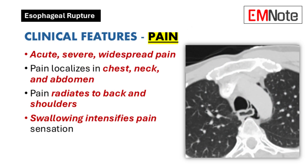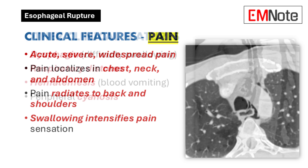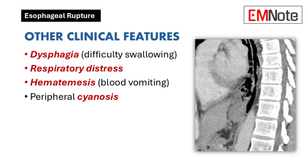The symptoms of esophageal rupture are severe and varied. The most prominent symptom is intense pain, which is often felt in the chest, neck, and abdomen. This pain may radiate to the back and shoulders, and is typically worsened by swallowing. Other symptoms include difficulty swallowing, trouble breathing, vomiting blood, and bluish discoloration of the skin due to poor oxygenation.